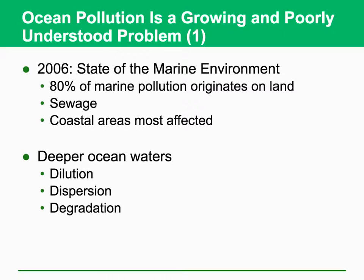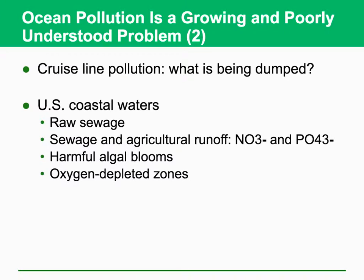Eighty percent of marine pollution originates on land; coasts and coastal areas are mostly affected. Cruise line pollution is another reason for ocean pollution. In the United States, ocean pollution is caused by sewage, agricultural runoff containing nitrate and phosphate, and harmful algae blooms. Just like eutrophication, algae blooms are also a very big problem. And then we have oxygen-depleted zones in the ocean — that's another big problem.